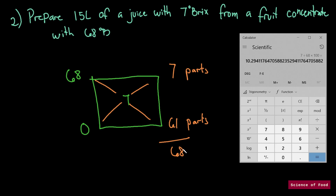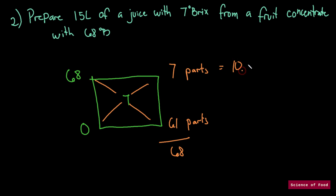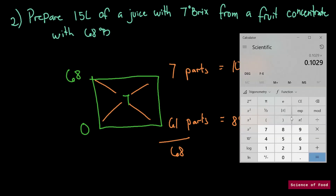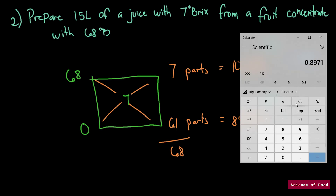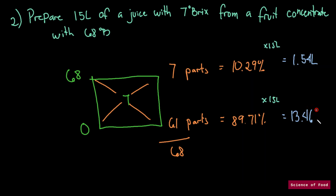7 divided by 68 times 100 gives us 10.29 percent. Here we would get 89.71 percent. It's very efficient to use Pearson Square. We multiply 15 liters by these percentages: 10.29 times 15 gives us 1.54 liters, and 89.71 times 15 gives us 13.46 liters. So we would need 1.54 liters of the fruit concentrate and 13.46 liters of water.